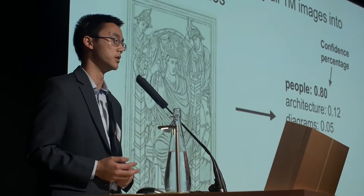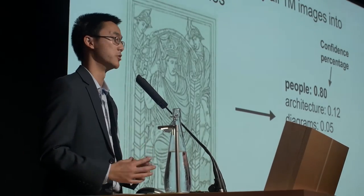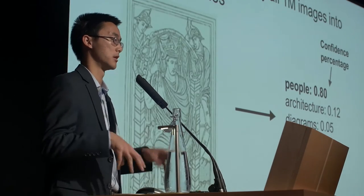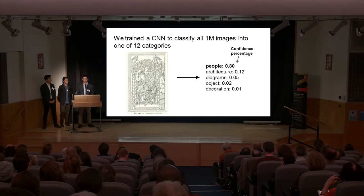Hi, Brian again. We wanted to tag all million images in the British Library dataset. To do this, we used convolutional neural networks. In particular, we used a Google-built neural network which had already been pre-trained by Google to classify images, but we rebuilt parts of it specifically for this purpose. What we did was manually annotate 10,000 images into one of 12 categories, including things like maps, decorations, and people. We worked with the British Library to get these categories.